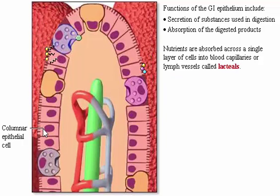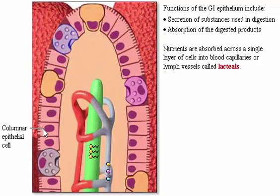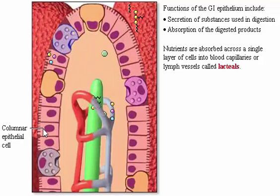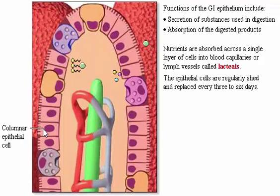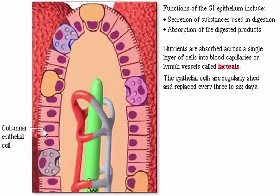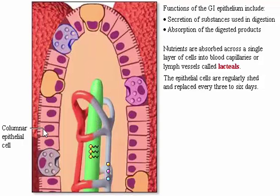Nutrients are absorbed across a single layer of cells into blood capillaries or lymph vessels called lacteals. Note that there are stem cells present throughout the GI tract that divide continuously to replace epithelial cells that are regularly shed. A new epithelium is produced every three to six days.